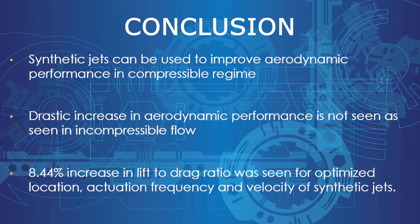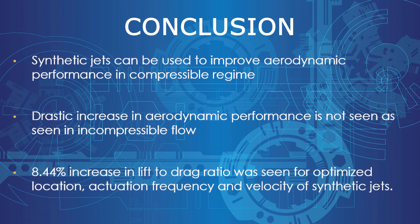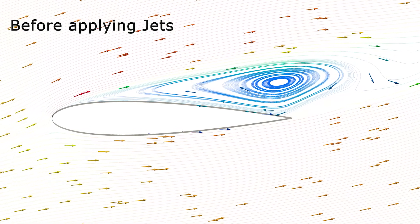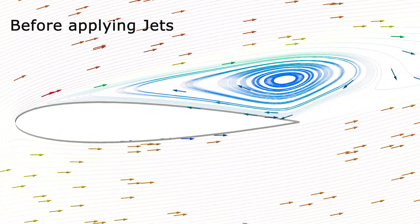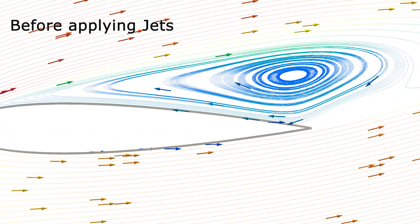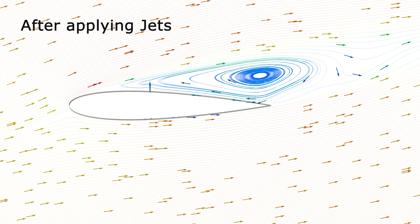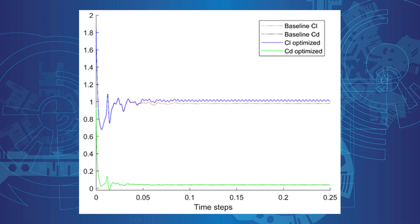In conclusion, synthetic jets can be used to improve aerodynamic performance in the compressible regime. Unlike in incompressible flow, a drastic increase in performance is not seen in compressible flow, but a reasonable reduction in wake size was observed. In this study, the aerodynamic performance was increased by 8.44% at the optimized location, actuation frequency, and velocity of synthetic jets.